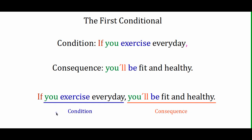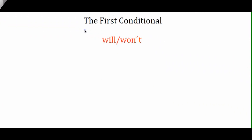Our selection of the future modal affects the meaning of the consequence. For example, if we use 'will' or 'won't' in our consequence, such as: 'If you get a job, you'll earn money' — using 'will' means it's very probable.